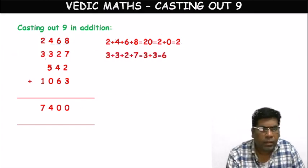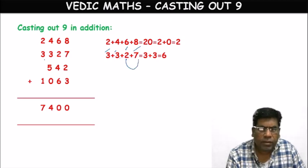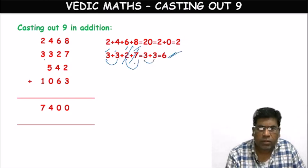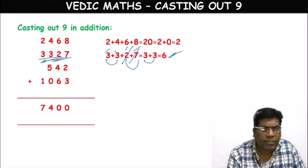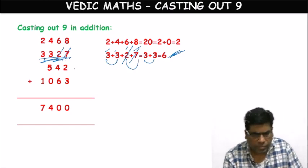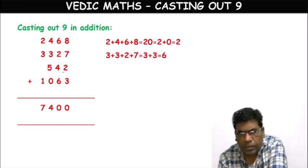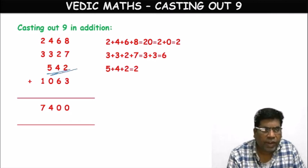Second number 3327: 3 plus 3 plus 2 plus 7. Is there a possibility of 9? Yes — 2 plus 7 equals 9, cast it out. Remaining: 3 plus 3 equals 6. This number as a single digit is 6. Third number 542: 5 plus 4 equals 9 — cast it out. Remaining is 2.